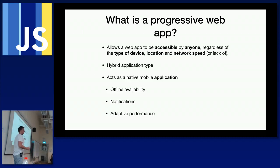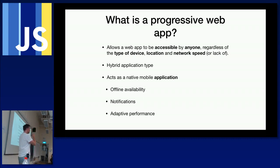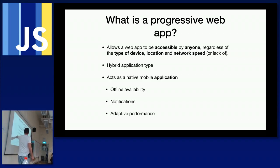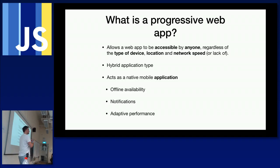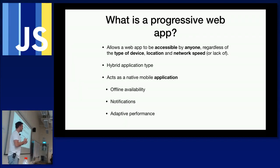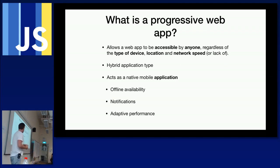What are those features? Think about a native mobile application — apps you install from the App Store or Google Play. Those native apps have features like offline availability: you may not have network, but you can still launch the app and interact with it. If it's a news app you'd see cached news, and when you go online the feed refreshes. You also get push notifications.